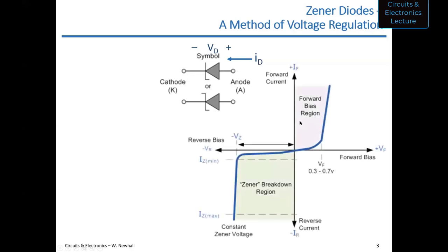Plotting the diode's current versus voltage characteristic, the right-hand side looks like a regular diode with a knee in the curve when the forward voltage Vf is reached. On the left side, very little current flows when the voltage is negative, and then you see breakdown. The key difference is that the zener voltage Vz — the breakdown voltage — is actually designed and specified for the zener diode, usually at a fairly low magnitude like negative three or negative five volts. This is typically where the zener diode is meant to operate.